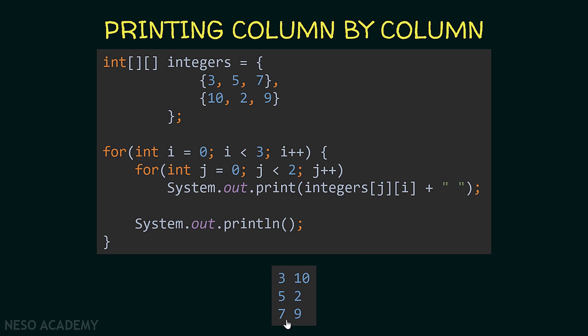So when you want to print column by column, the outer loop iterates over the columns and the inner loop iterates over the rows. Be careful to use the correct index: j is the index for the row and i is the index for the column.